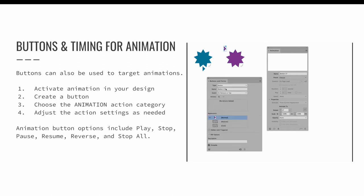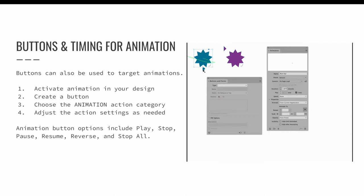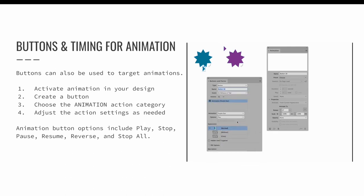Then use the buttons and forms panel to convert an object into a button. For animations, change the action on the button to animation. You will then be able to choose which animation to affect — select the name of the animation and what options to adjust. Options include play, stop, pause, resume, reverse, and stop all.